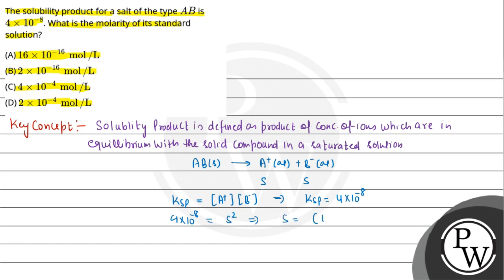Toh S nikalte hain: S = (4 × 10⁻⁸)^(1/2). Solubility nikalti hai 2 × 10⁻⁴ mole per liter. Yeh mole per liter hai, iska matlab yahi hamare paas molarity bhi hogi. Toh final answer hai option D — 2 × 10⁻⁴ mole per liter.